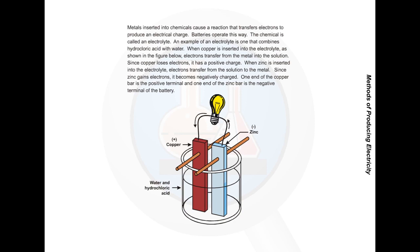When zinc is inserted into the electrolyte, electrons transfer from the solution to the metal. Since zinc gains electrons, it becomes negatively charged. One end of the copper bar is the positive terminal, and one end of the zinc bar is the negative terminal of the battery.